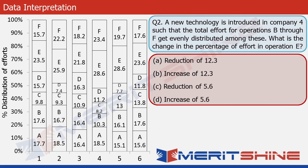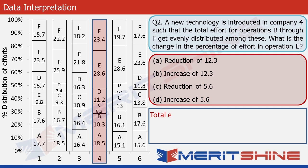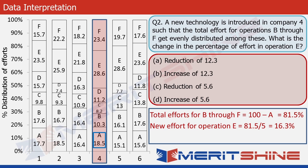Let's go to question number 2 now. It says that because of a technological change, the total effort required for operations B, C, D, E, F are evenly distributed among these 5 operations. Operation A is not affected. We need to find the change in percentage effort for operation E. This is the bar for company 4. The total effort for all operations from B to F would be 100 minus the effort for A. A as can be seen from the graph is 18.5. So the sum of these 5 would be 100 minus A which is 81.5%. Now since the effort is equally distributed, the new effort for operation E would be 81.5 divided by 5 which is 16.3%. The original percentage effort required for E was 28.6% as can be seen from the graph. So the change in percentage effort for operation E is 28.6 minus 16.3 which gives us 12.3%. So the answer is option A, reduction of 12.3.